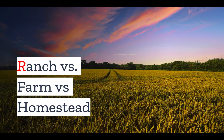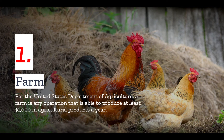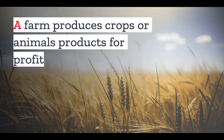Number one: farm. I think we all have a general understanding of what a farm is, but per the United States Department of Agriculture, a farm is any operation that is able to produce at least a thousand dollars in agricultural products a year. This is a very broad definition, but in general a farm is any kind of enterprise that produces crops or animal products for profit.